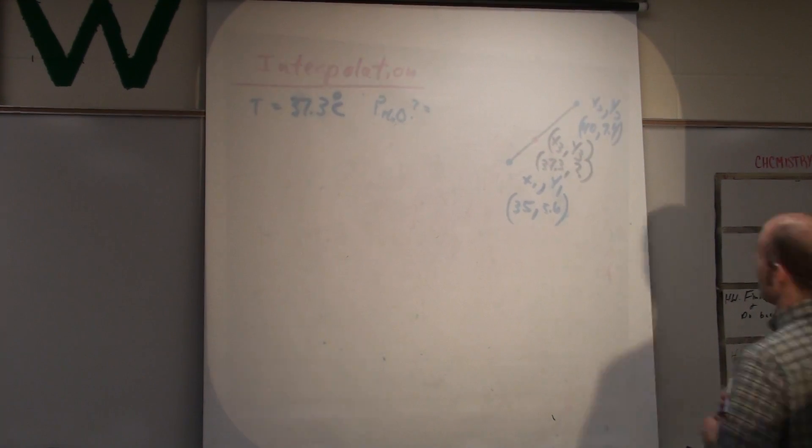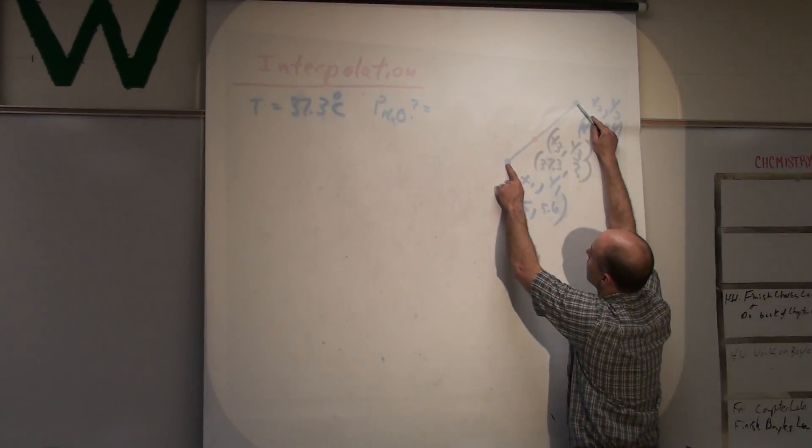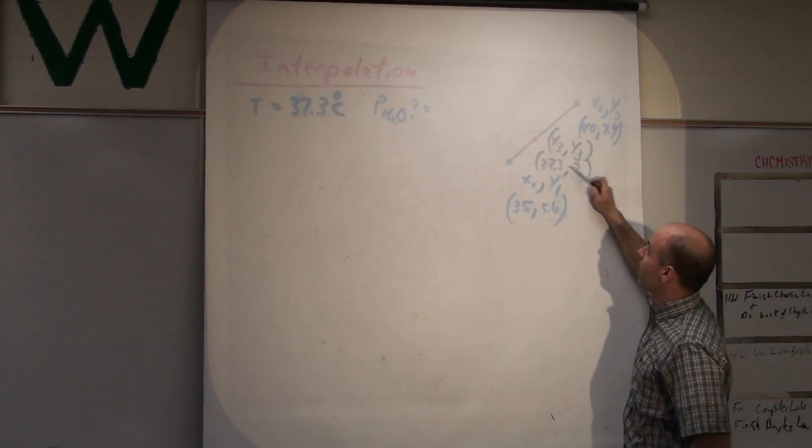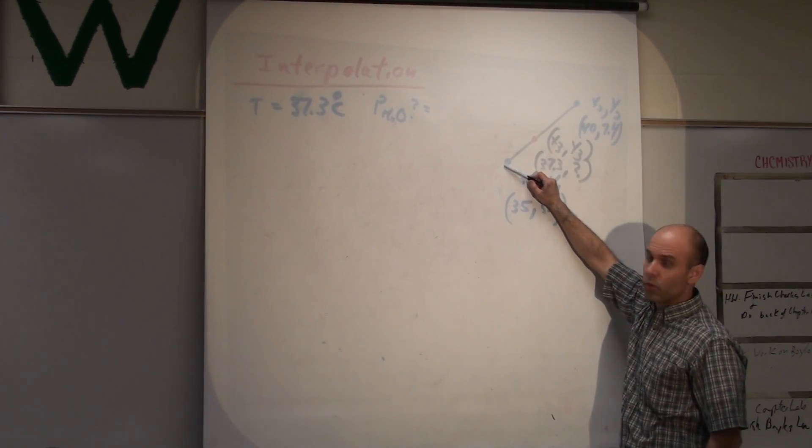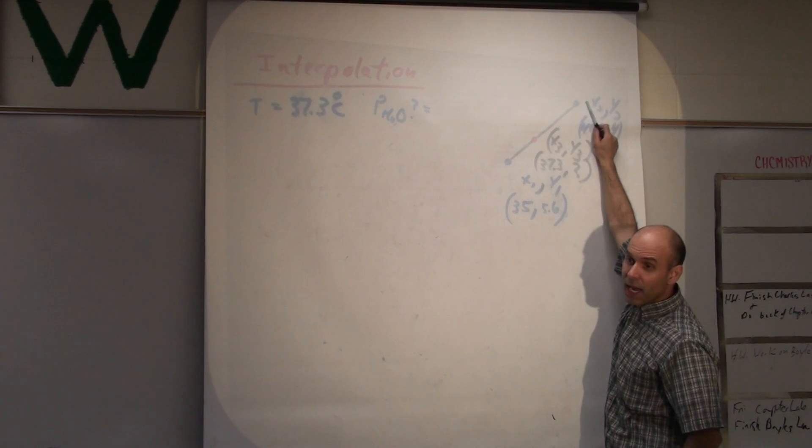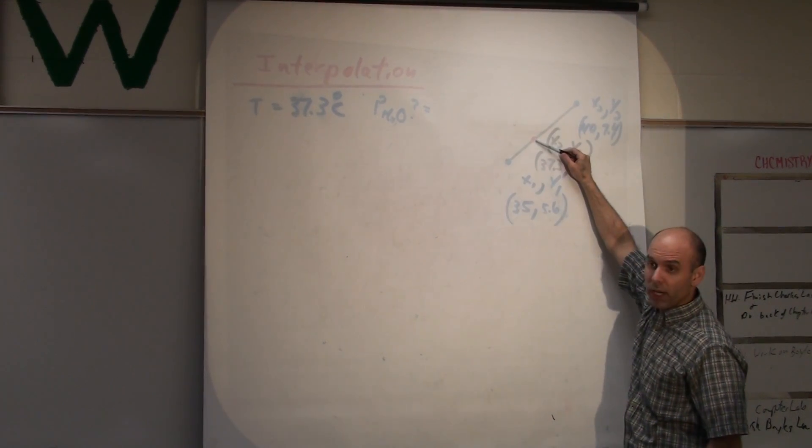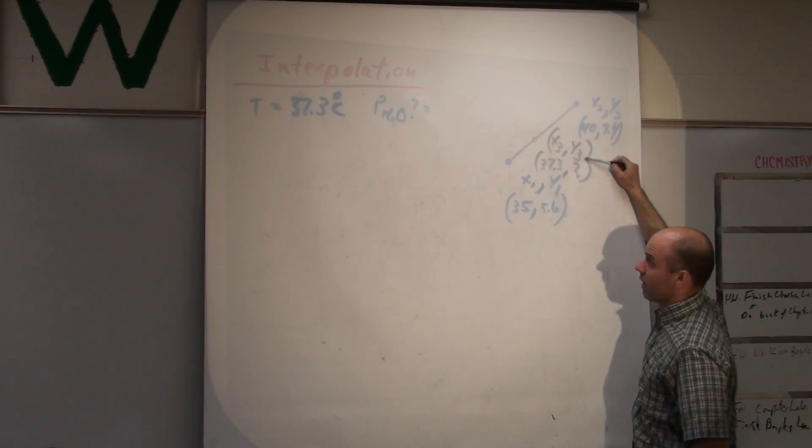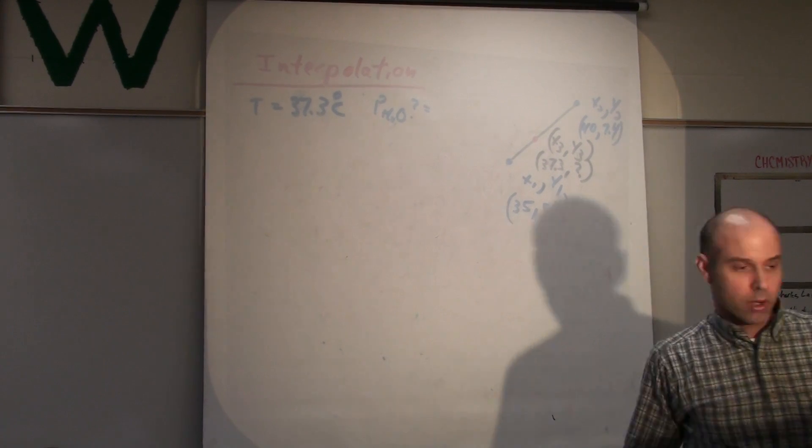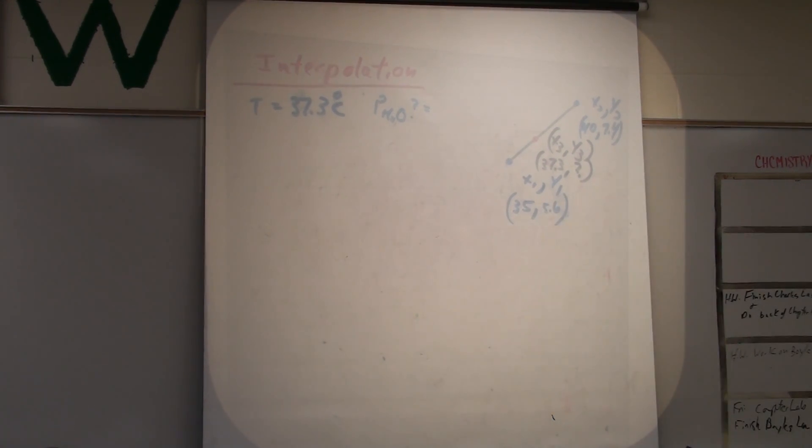And the value would be 37.3 and we don't know the Y value. So, we have these two points. This point, we know the X value but not the Y value. So, all we have to do is find the equation of that line. So, this is what I call the first method.